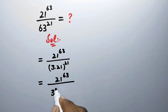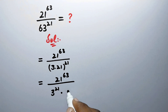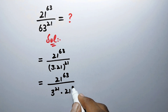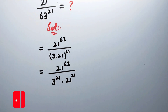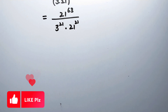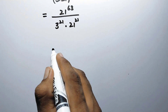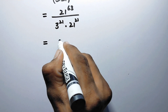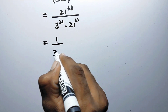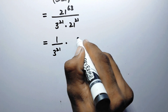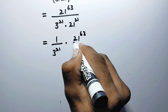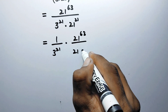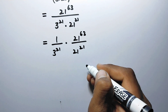So it will be 21 to power 63 divided by 3 to power 21 times 21 to power 21. In the next step we may separate the fraction as: 1 over 3 to power 21, times 21 to power 63 over 21 to power 21.